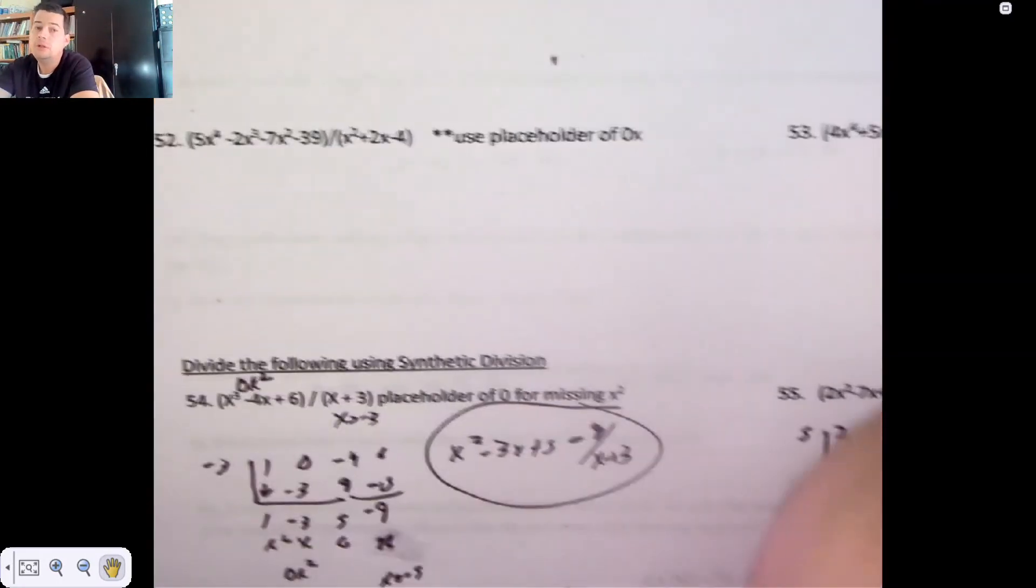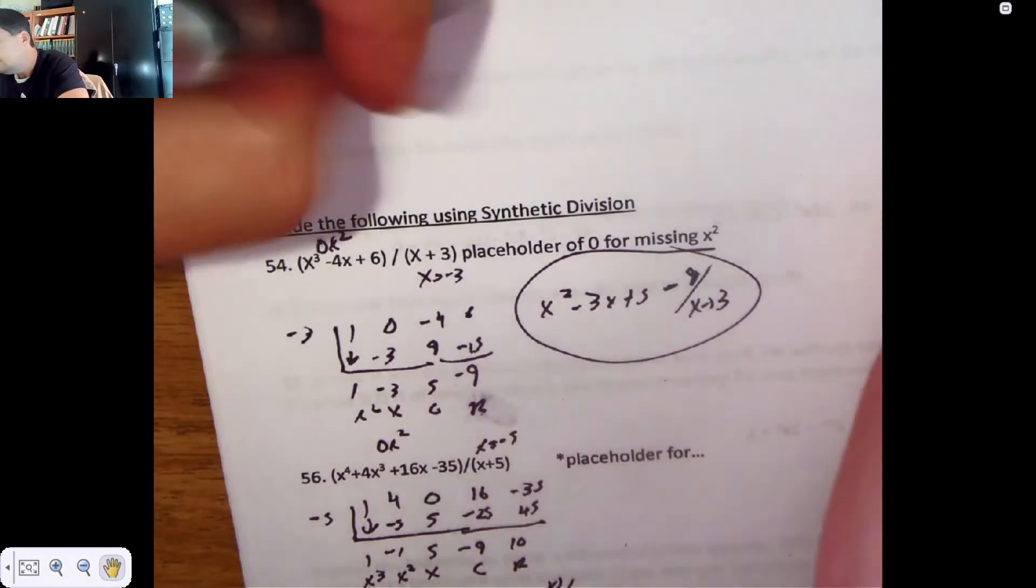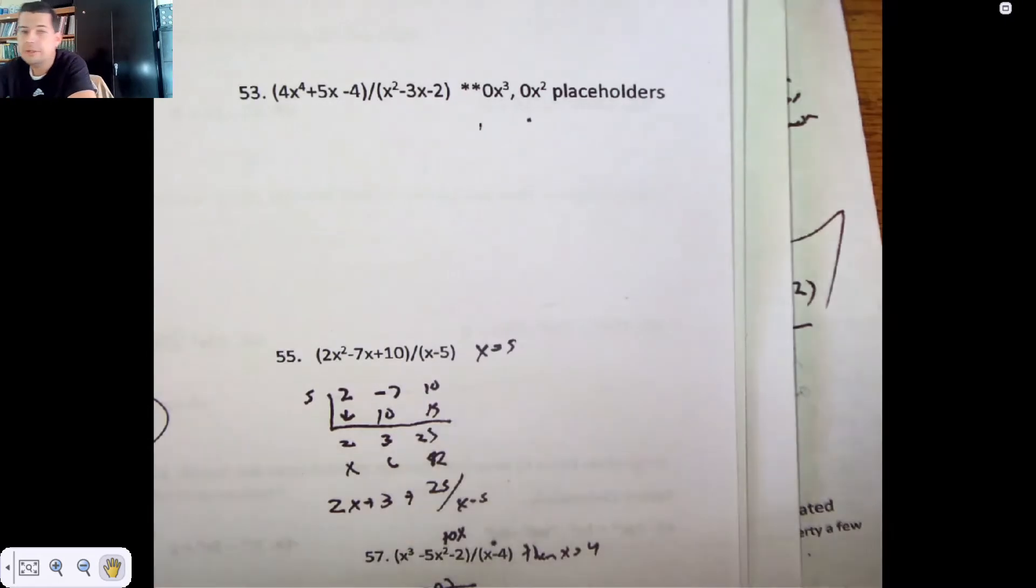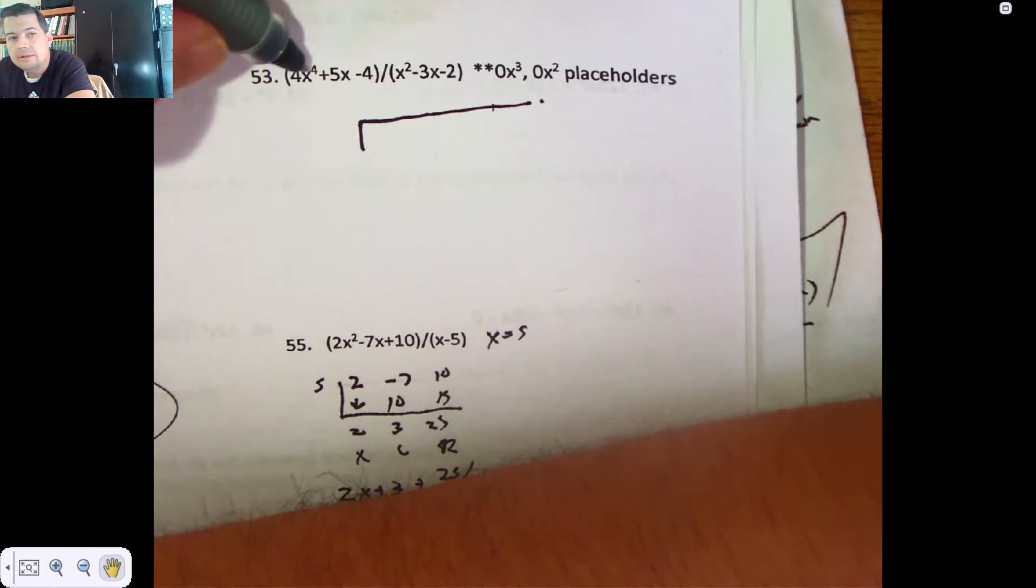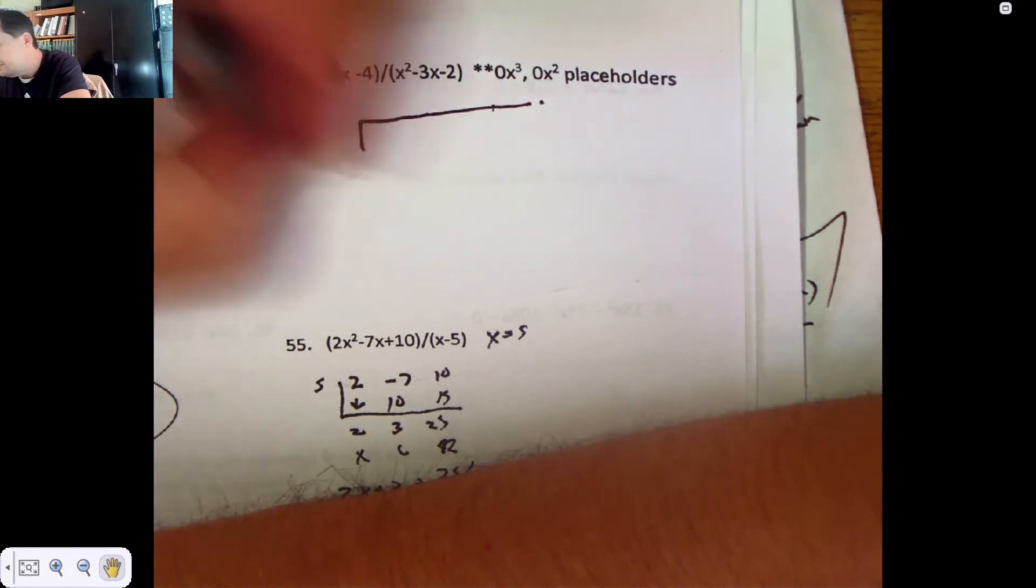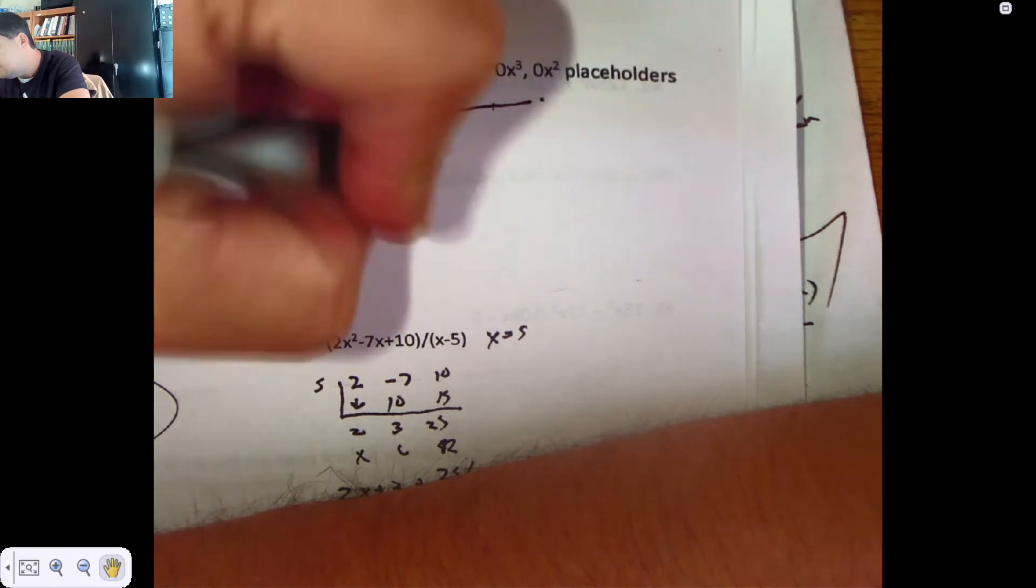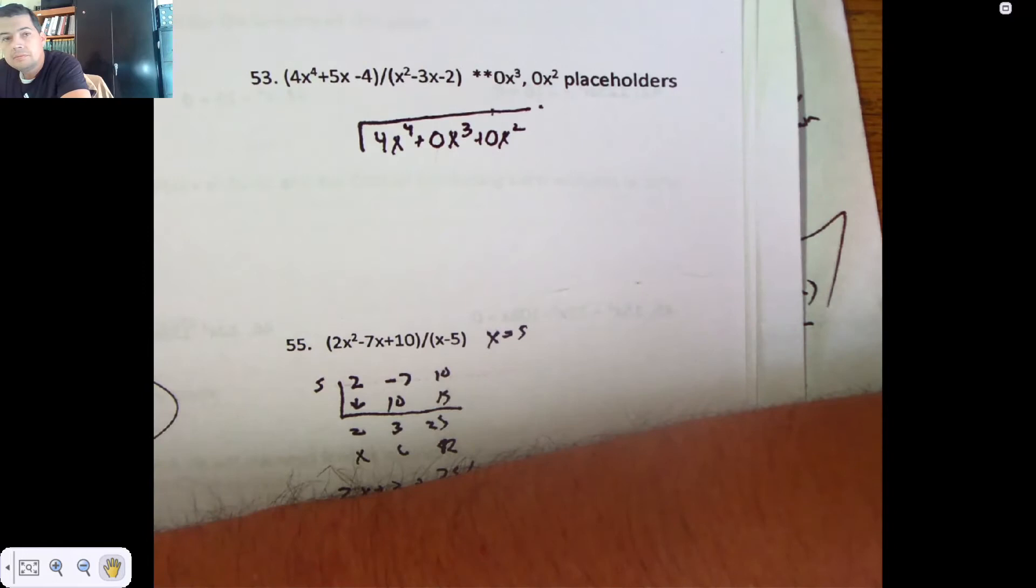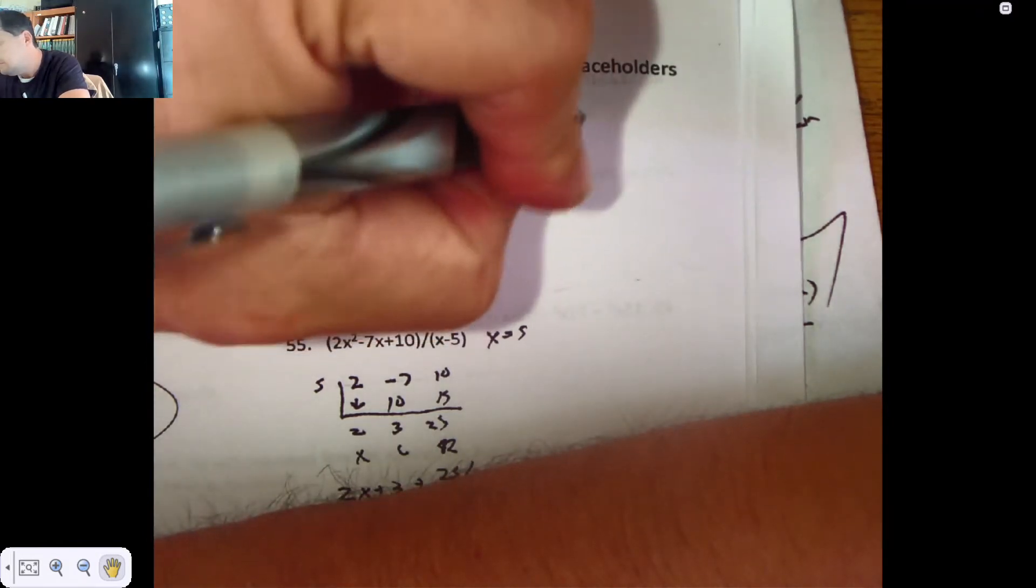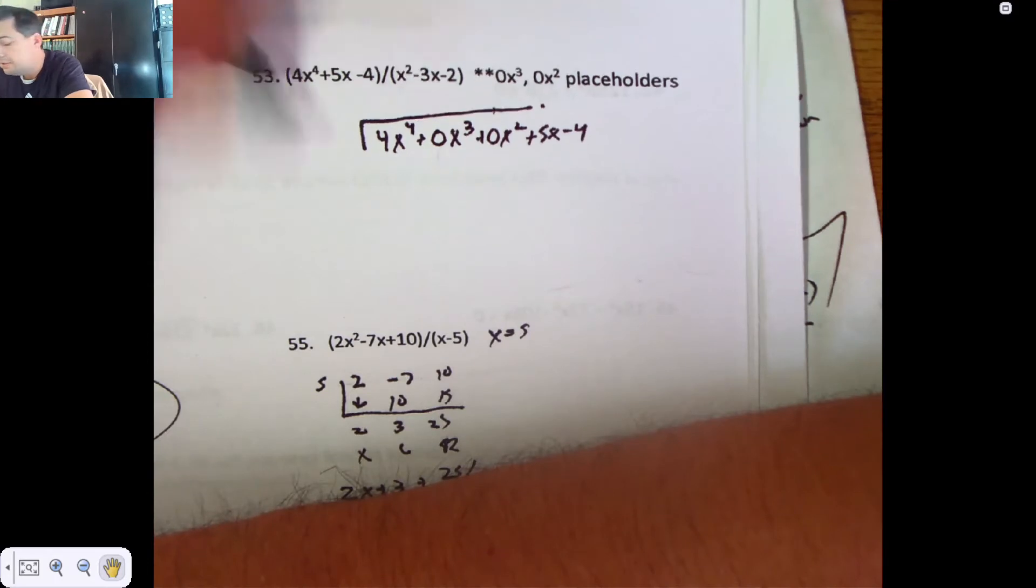Alright. Moving on. The instruction set up here is long division. Long division is long. It's not necessarily hard. It's just long division. That's why they call it that. This guy's got some jumps happening. We jump straight from x to the 4th to 5x. So I'm going to be including placeholders for x cubed and x squared.